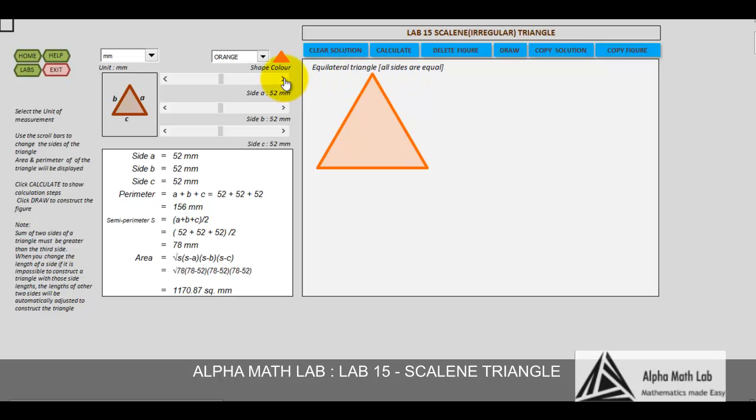Change the side again. Now only two sides are equal, 52 and 52, but one side is different. So side A is over here, side B is over here, and side C is over here. Now side A is different and side B and C are equal, so these two sides are equal. Hence it is an isosceles triangle.